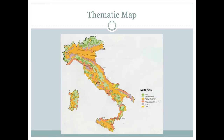Thematic maps, on the other hand, are showing some kind of story or theme or idea about the land. This is a thematic map of Italy showing the various land uses. It's not really designed to navigate from one city to another, but it's more interested in showing you the pattern of different land uses and helping you interpret why, for example, some of the vineyards might be where they are.